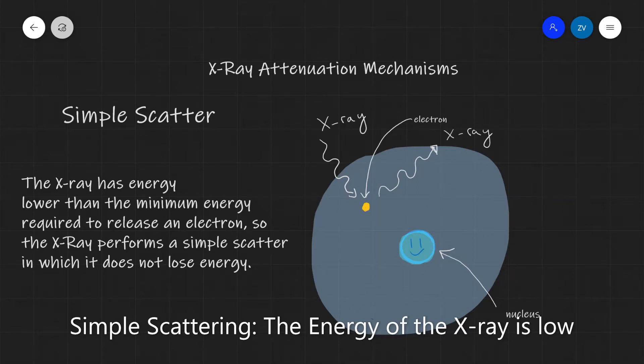The electron's energy state will be most likely completely unchanged, and in general this does not happen very often. In medical physics when we're producing X-rays they tend to have a lot more energy. So the simple scatter is almost an insignificant portion of the ways that X-rays interact with matter.